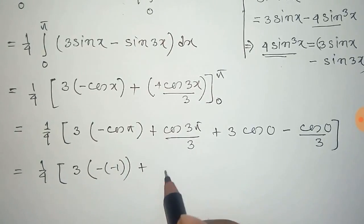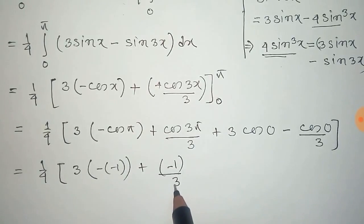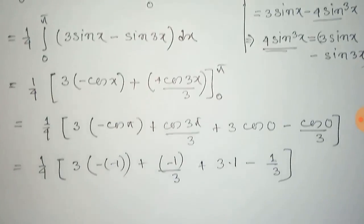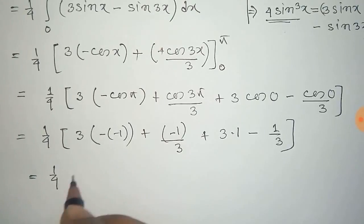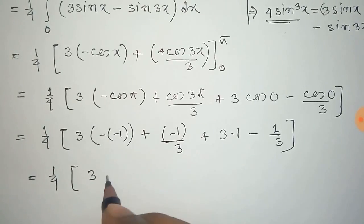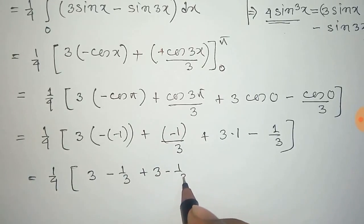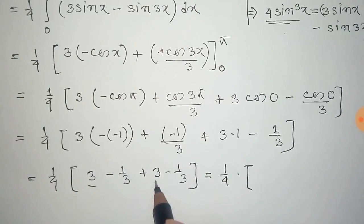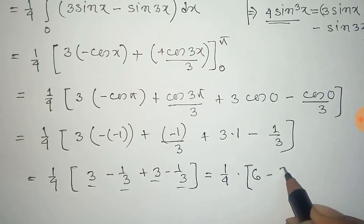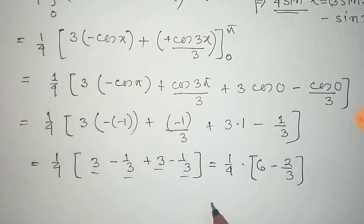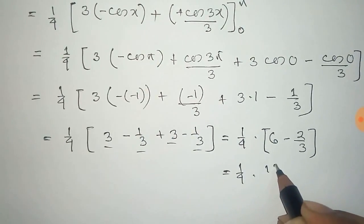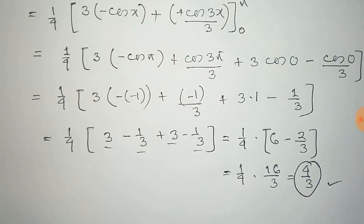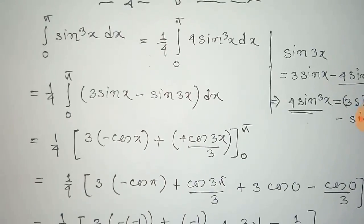The value of cos(π) is −1, so −(−1) = +1 times 3. cos(3π) = −1, so that gives −1/3. cos(0) = 1, so 3×1 − 1/3. This simplifies to one-fourth times [3 + 1/3 + 3 − 1/3] = one-fourth times 16/3, which equals 4/3. Thus the integral of sin³(x) dx from 0 to π equals 4/3.